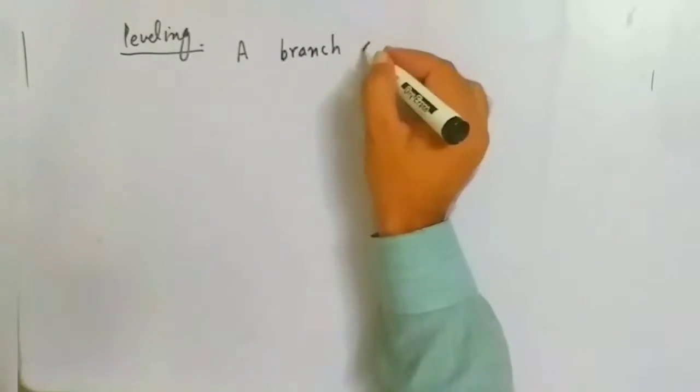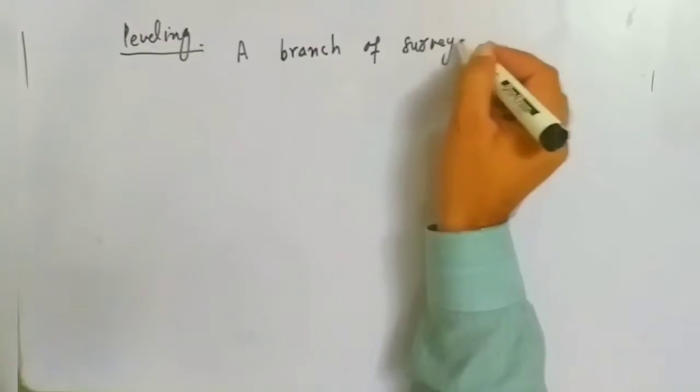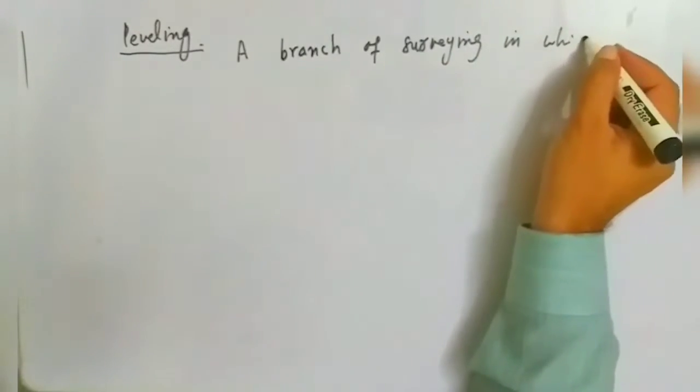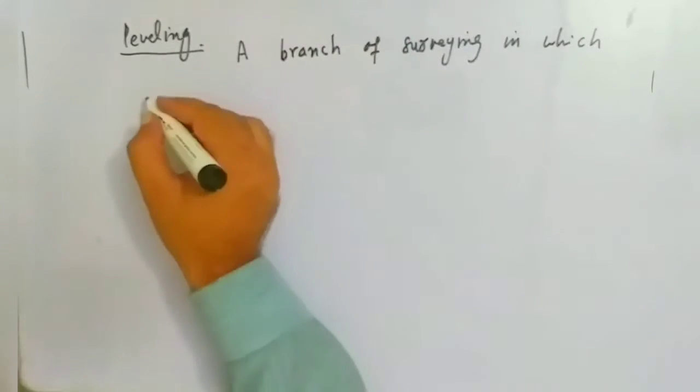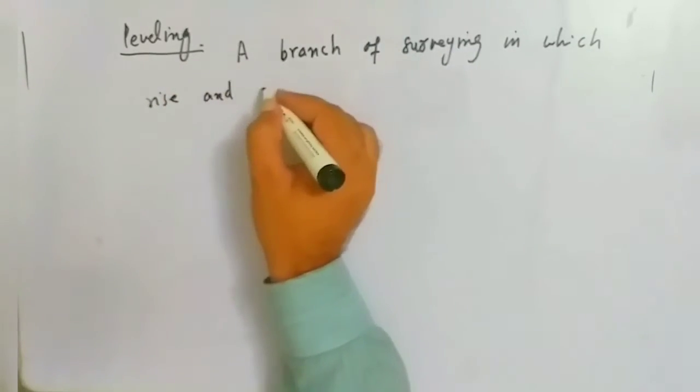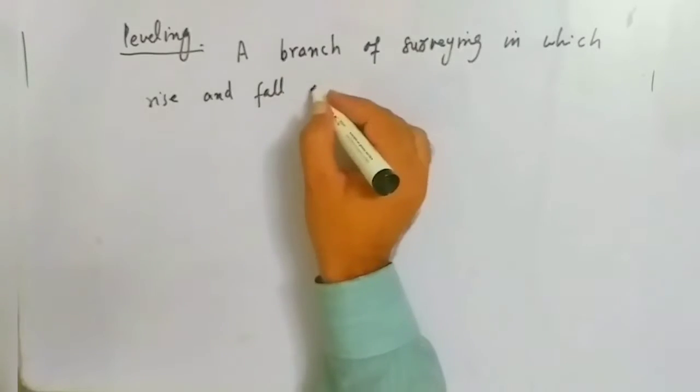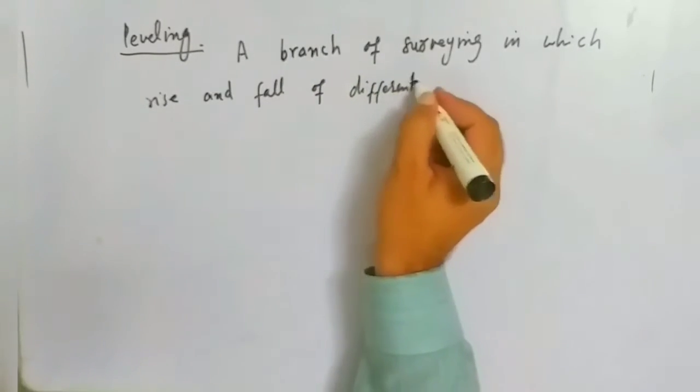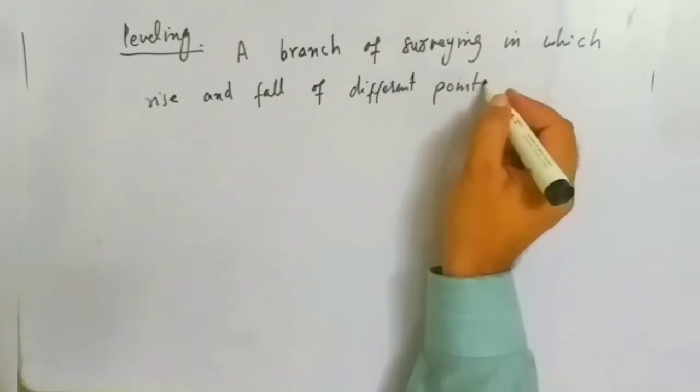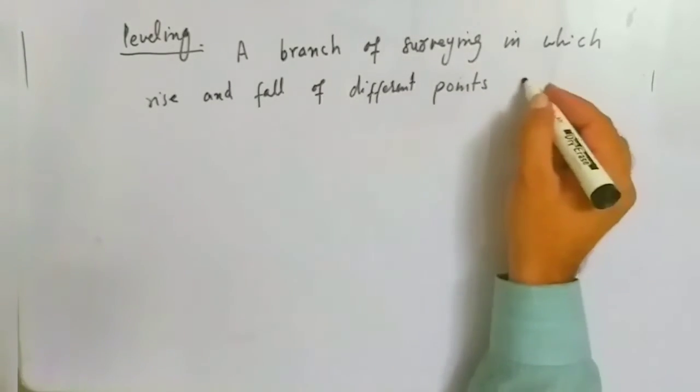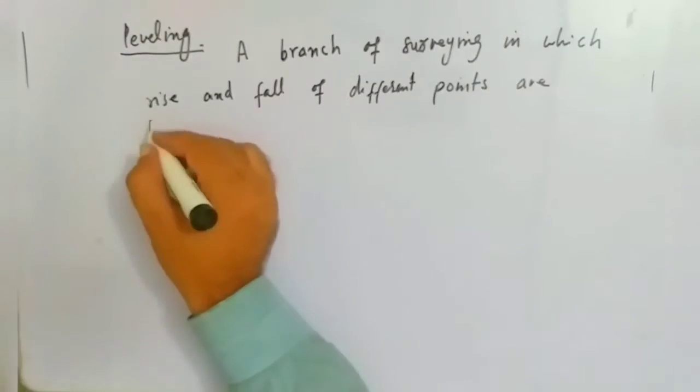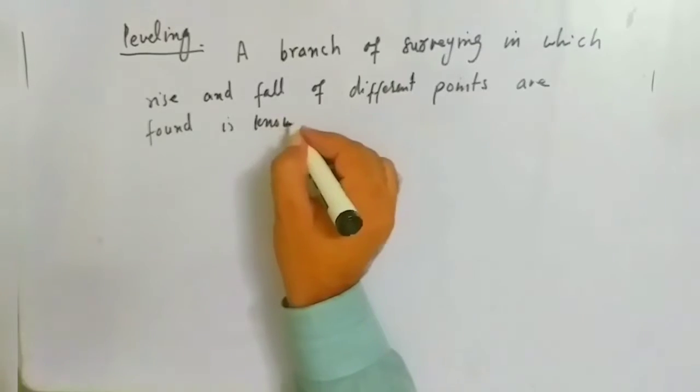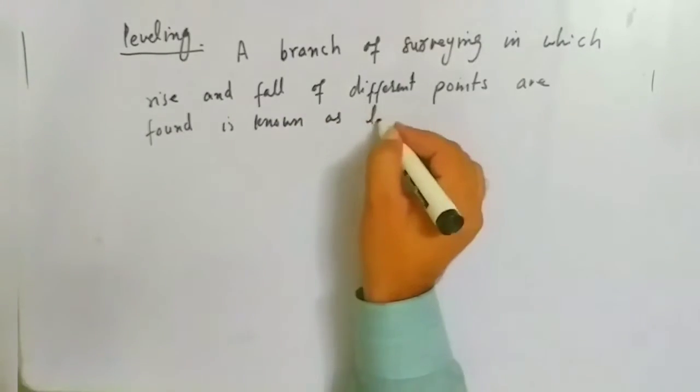A branch of surveying in which rise and fall of different points are found as a standard is known as leveling.